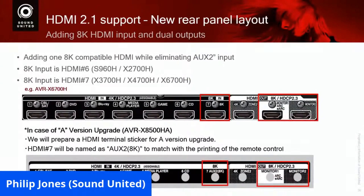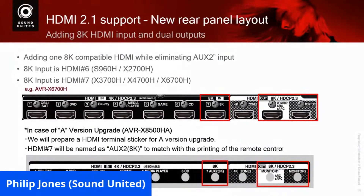This is the back of a 6700. You'll see there's a total of seven inputs on the back and one on the front for a total of eight. One of the seven is labeled '8K' — that's the input that will handle the higher bandwidth. Then you have your zone two, and your two outputs: monitor one and monitor two for your TV and projector. When we upgrade to the X8500HA, the sticker on the back will be updated. If you already have an 8500 and send it in for the upgrade, when they replace the board they'll also replace the sticker so it matches. It's the same board, and the upgraded units will hit stores around the same time.